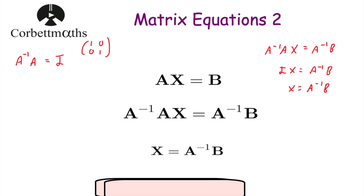To summarise: when solving an equation in the form AX equals B, multiply both sides by the inverse of matrix A, making sure it goes in front. The inverse of A times A gives the identity matrix, and the identity matrix times X is just X. The right-hand side will be the inverse of A times B, and that gives your answer. I really hope you find this video useful — please like it and subscribe to the YouTube channel.